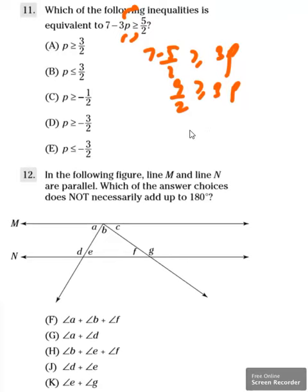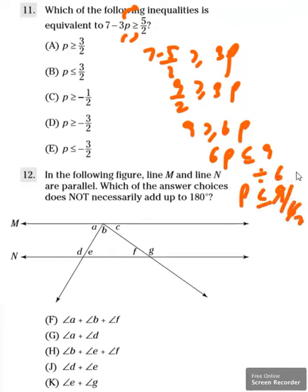And then multiplying with 2 on both sides, I'll get 9 greater than or equal to 6p. I can write it in this way too. And then upon dividing by 6 will give me p less than 9 over 6, which is nothing but upon simplification 3 by 2. This is my option.